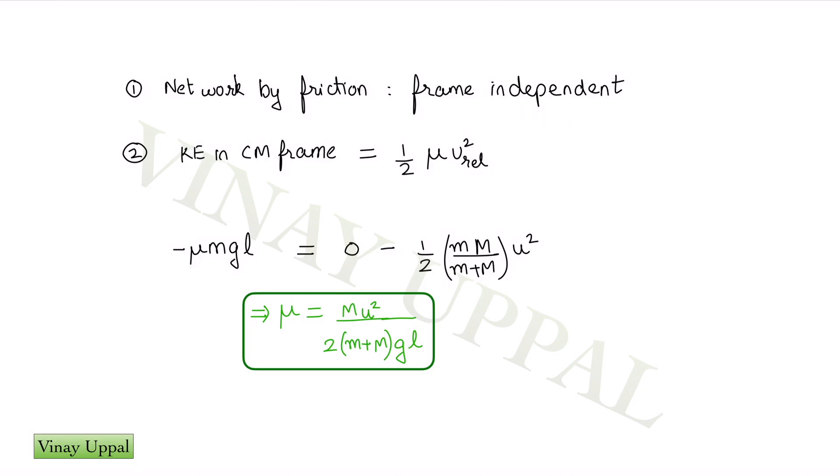And another concept that I am going to use is kinetic energy in the center of mass frame is equal to half mu u_rel squared. Here mu is reduced mass and reduced mass formula is given by 1 by mu equals 1 by m1 plus 1 by m2. So I am going to assume that you are familiar with this concept of reduced mass.